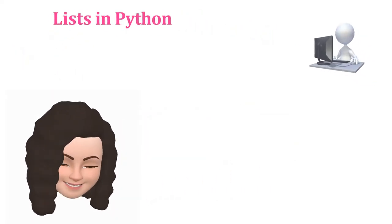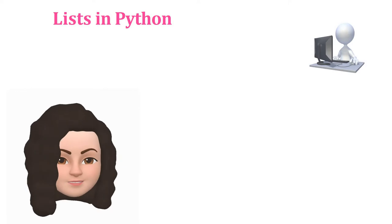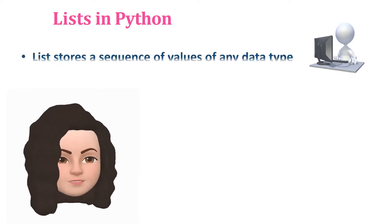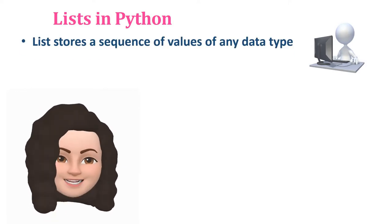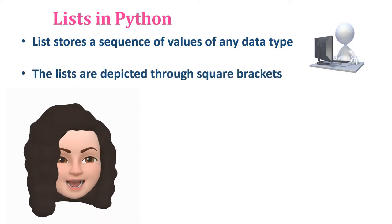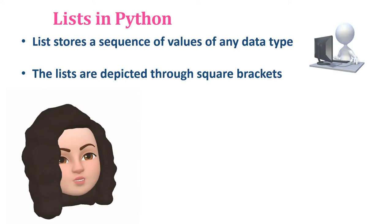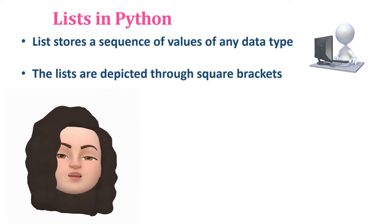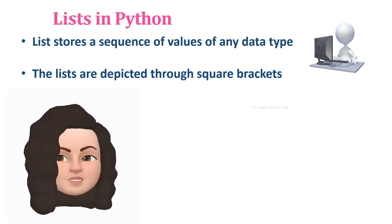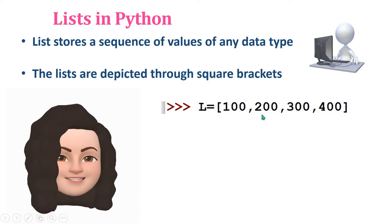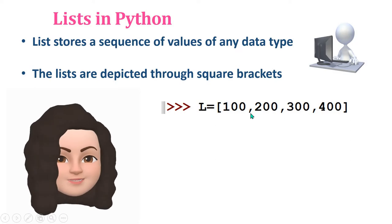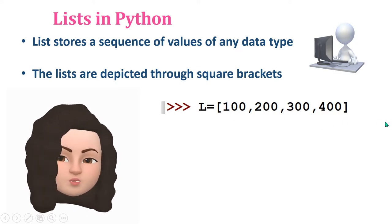Do you know what is a list? It is nothing but a set of values or a sequence of values of any data type, separated by comma and enclosed within square brackets. Look at the example: L is equal to 100, 200, 300, 400. All these are integer data type, separated by comma and enclosed within square bracket.